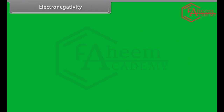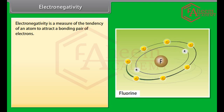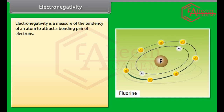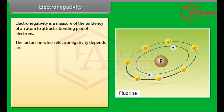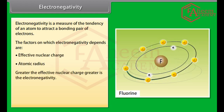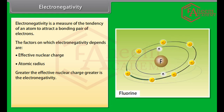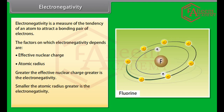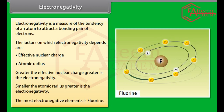Electronegativity is a measure of the tendency of an atom to attract a bonding pair of electrons. The factors on which electronegativity depends are effective nuclear charge and atomic radius. Greater the effective nuclear charge, greater is the electronegativity. Smaller the atomic radius, greater is the electronegativity. The most electronegative element is fluorine.